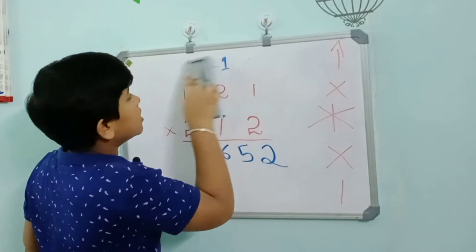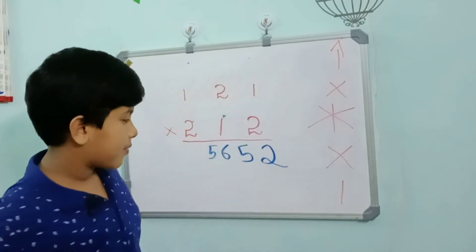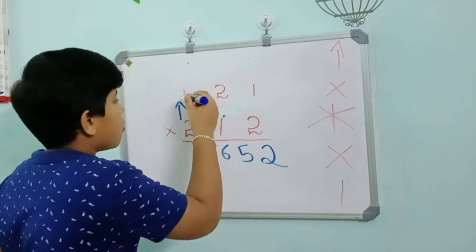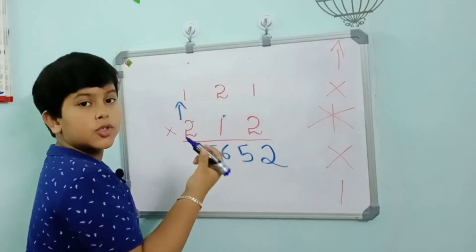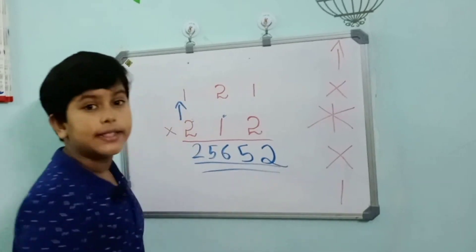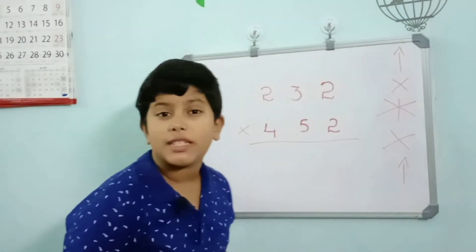The final one is upwards: 1 into 2 equals 2. So here is the answer. Now let's move to a bigger one with carry forward.